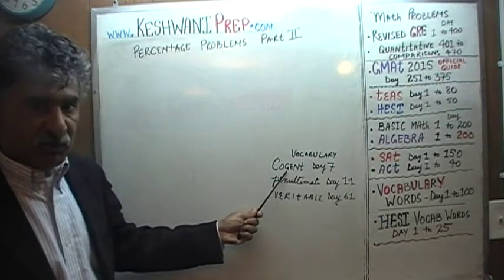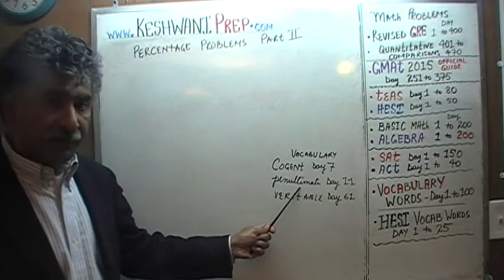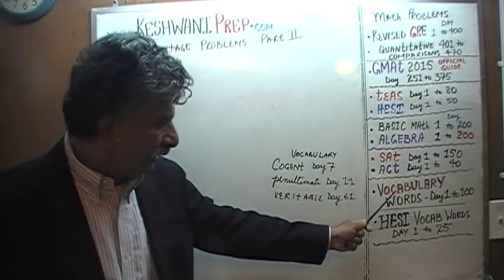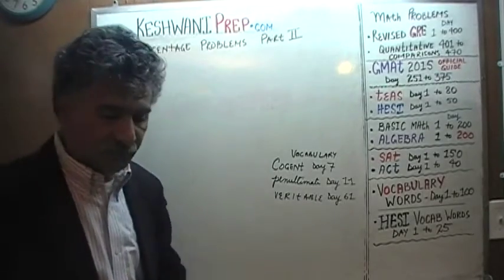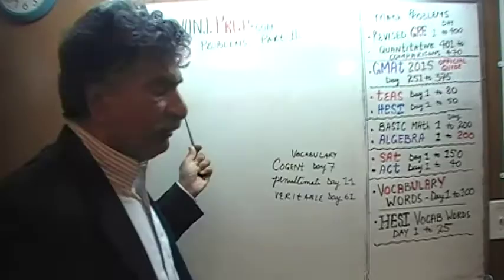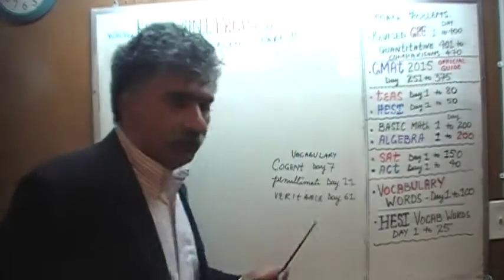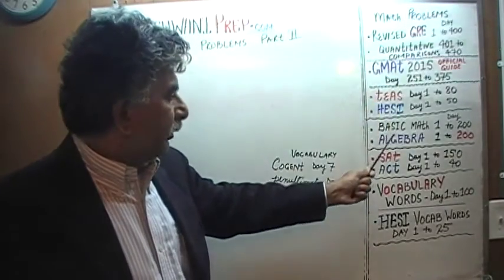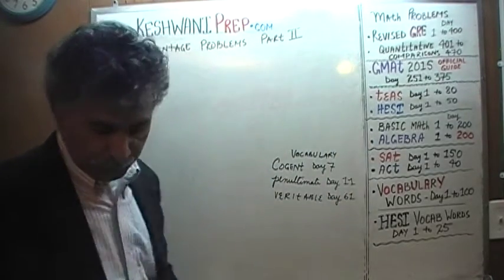The word 'cogent' means to be persuasive — something we learned on day number 7 of our vocabulary lessons. 'Penultimate' means second to the last — learned on day number 11. And 'veritable' is something we learned on day number 61. These are good words to know, especially if you're preparing for the GRE, GMAT, SAT, ACT, or similar exams — it will help you get a better score.